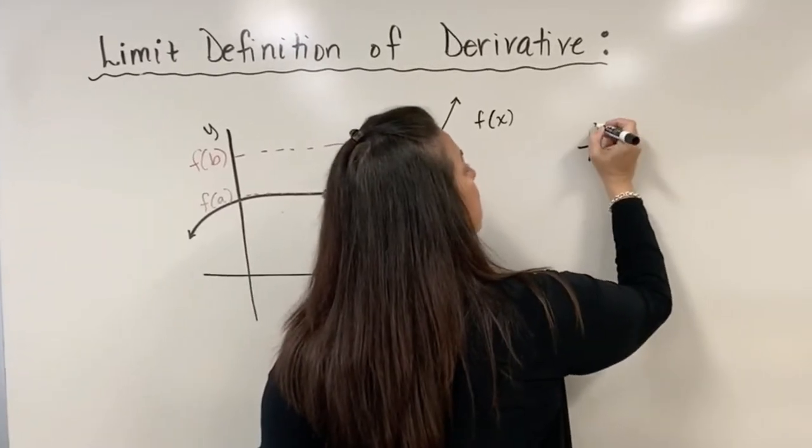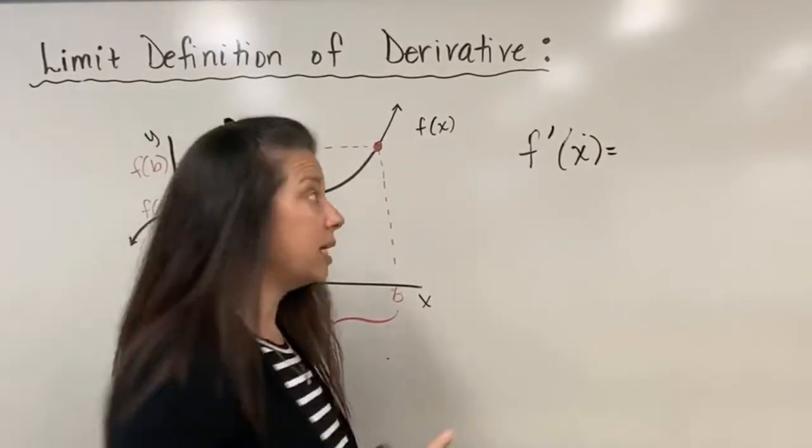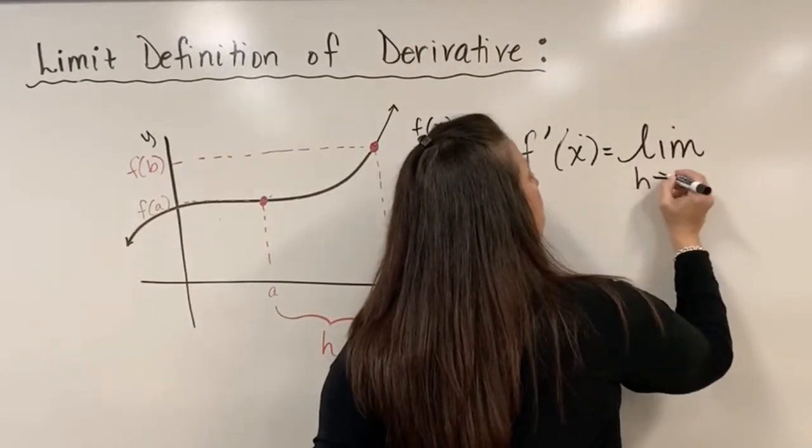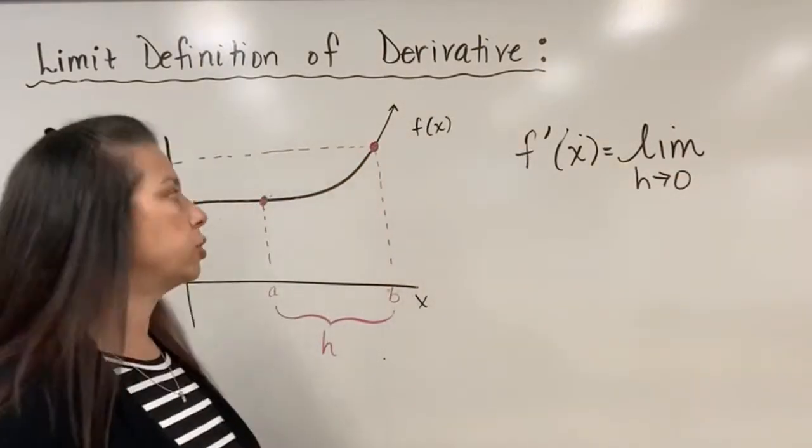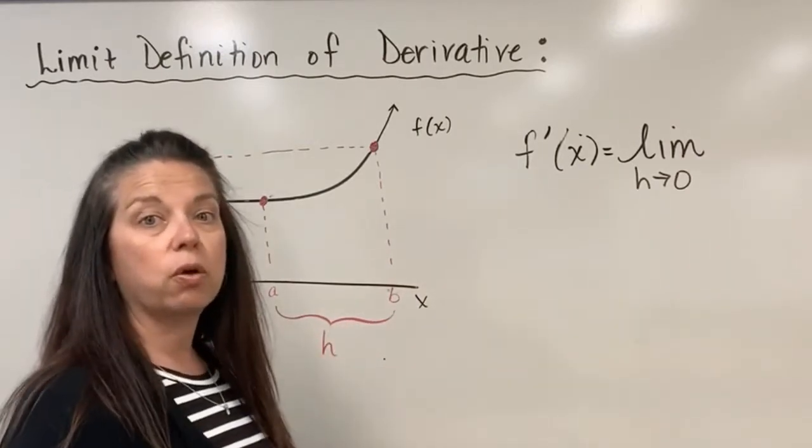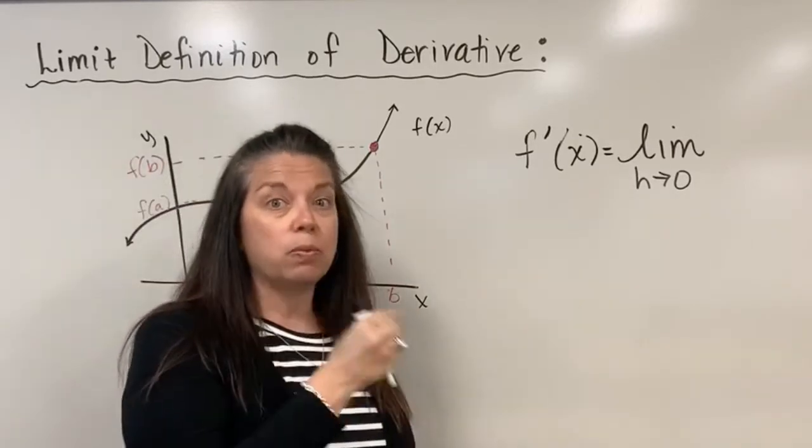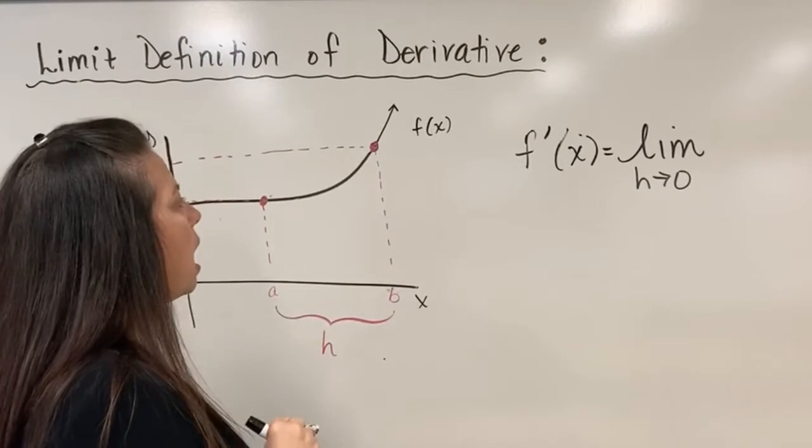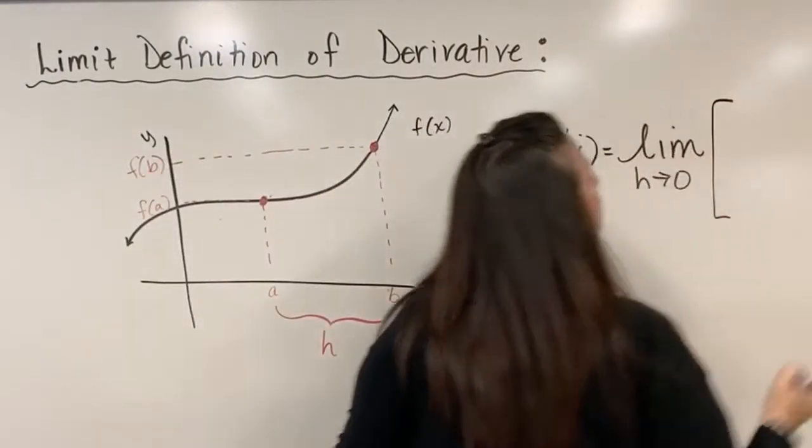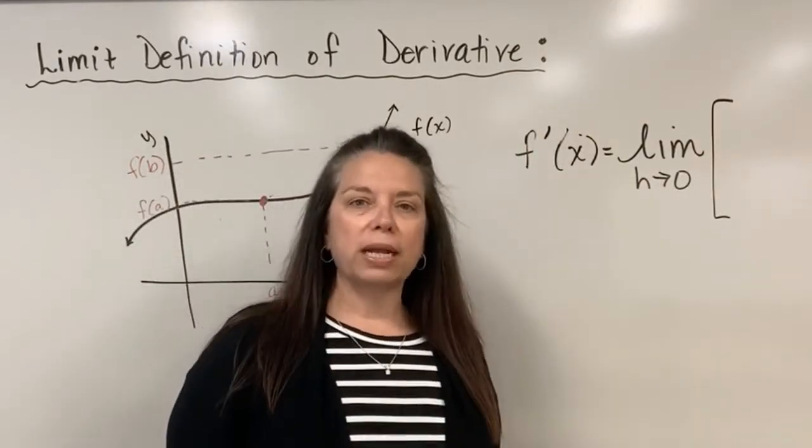So we can say now that we have f prime of x will be equal to the limit, just as I was saying, the limit as when our h goes to zero. So the limit as h goes to zero, this is our h, we want that to essentially go to zero. It won't actually be zero per se. It's a concept, an idea that we want it to go to zero. And then now what we're going to have following this is essentially an expression, a formula that is our average rates of change.